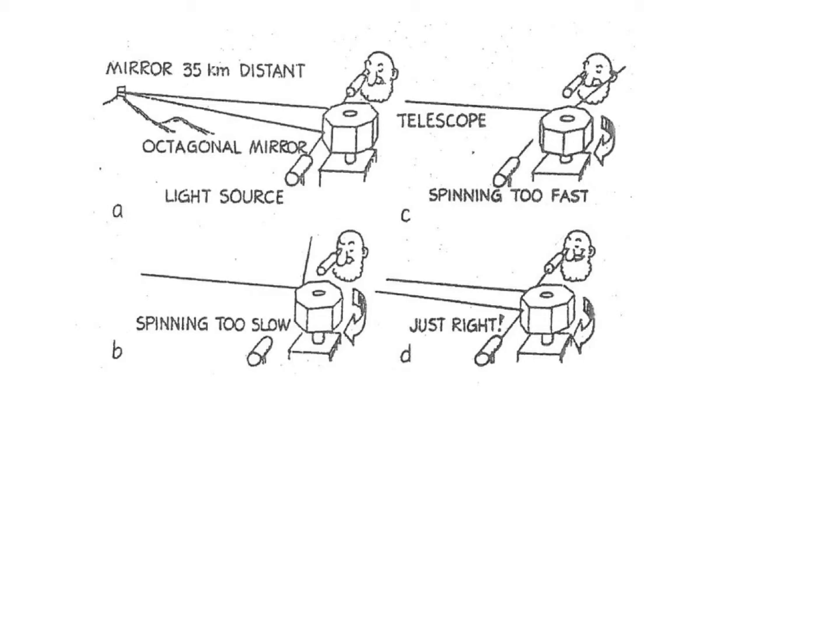Once again, Michelson was the first American physicist to win a Nobel Prize in physics for his design of optical instruments such as this, the very precisely spinning and lined up mirrors used to measure the speed of light in this particular case.